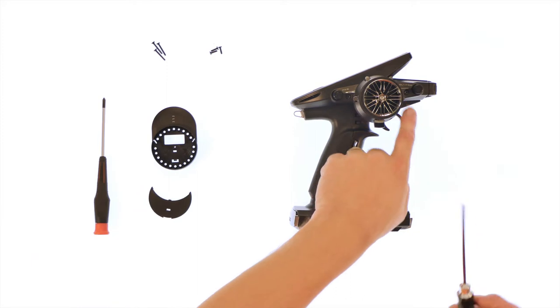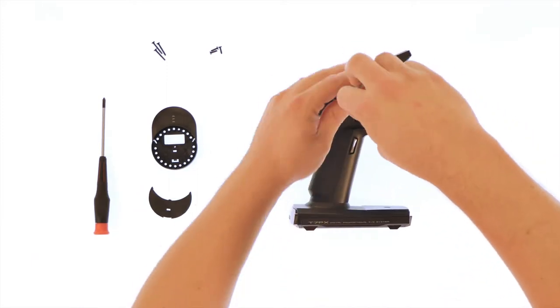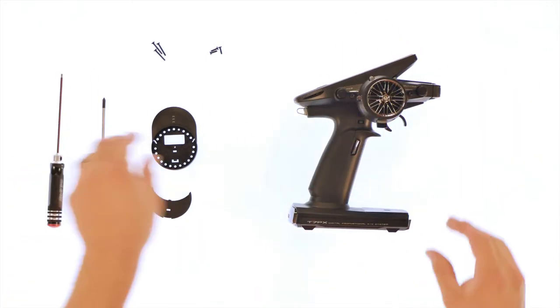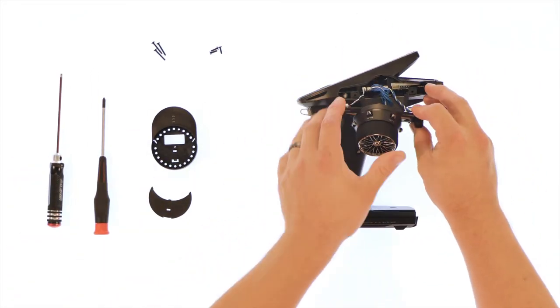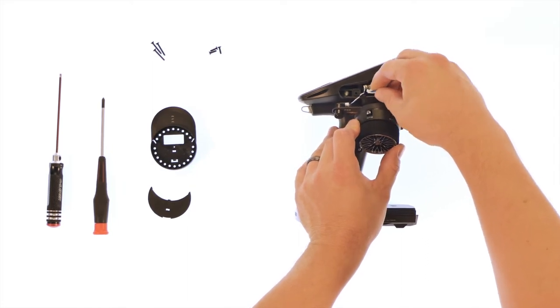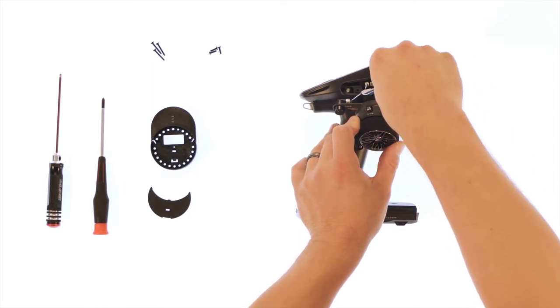We'll start off by removing the two screws on the side of the transmitter. Next, you'll want to remove the wire harness from the transmitter. When you're doing this, be careful and don't tug too hard. It'll pretty much pop off.